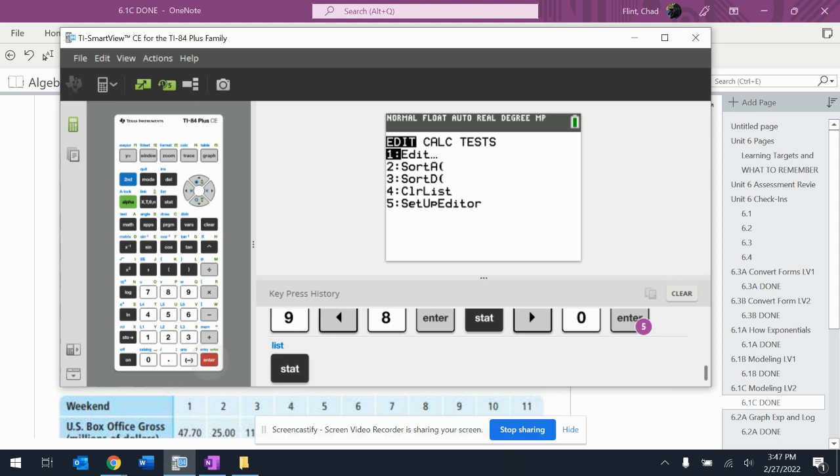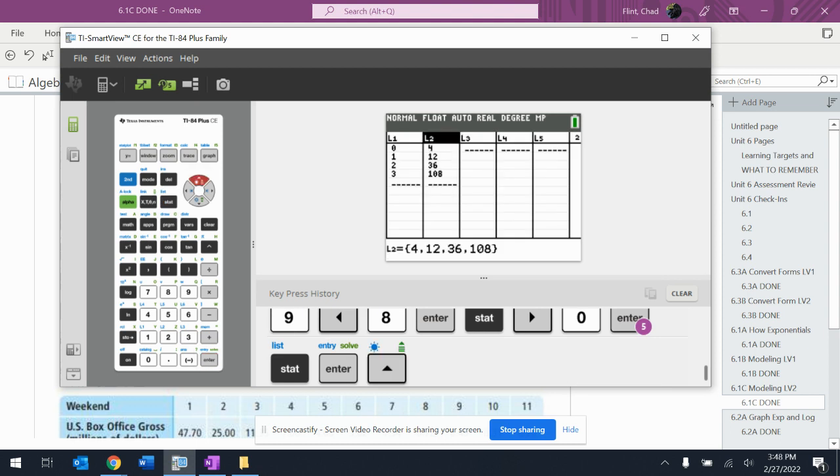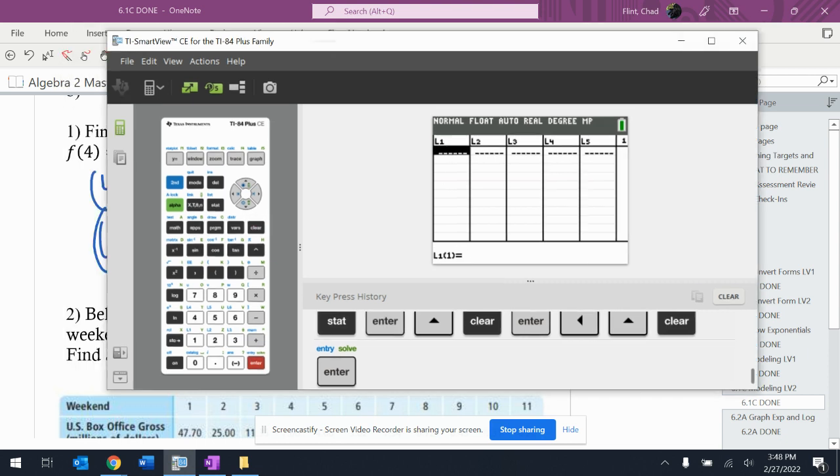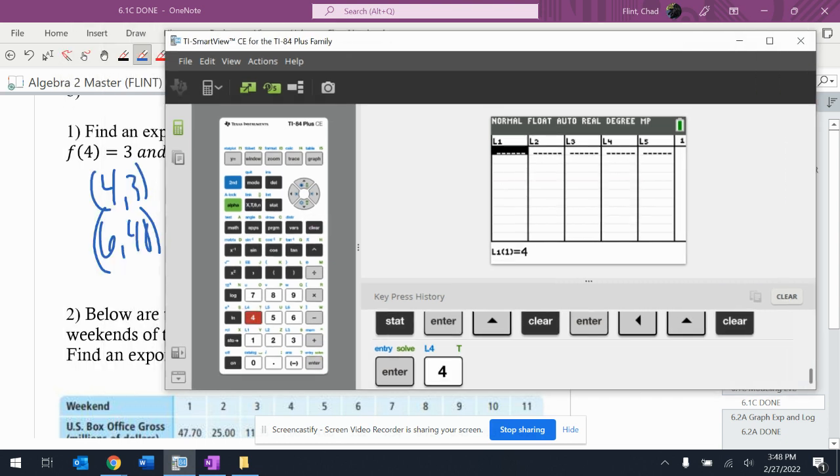So I go to my calculator, stat, edit, clear these out. And it was 4 and 6, and then 3 and 48.